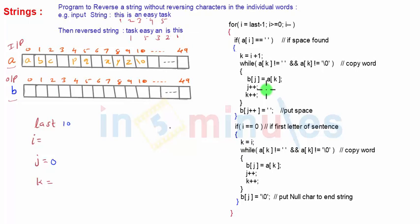For that, we'll first find out the last, that is the length of the string. In this case, last will be 10. Now using that 'last' variable and using 'i' variable, we'll move from last minus one index to zero using this for loop.